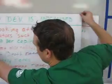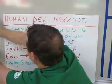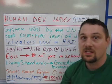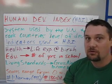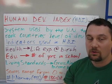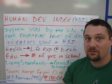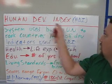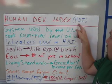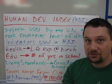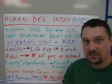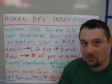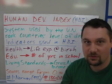The United Nations — basically the organization of all the countries in the world — has come up with a way to rank countries, and that's called the Human Development Index, or HDI. I'm going to be referring to the abbreviation HDI a lot because it's just too long to say Human Development Index every time.